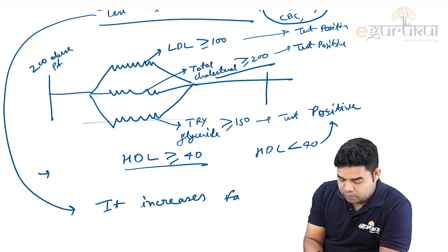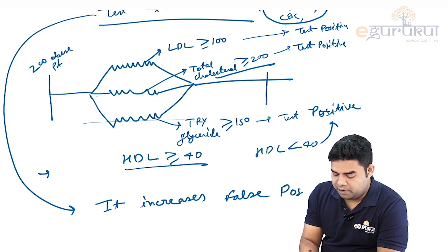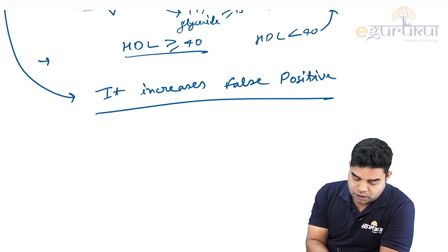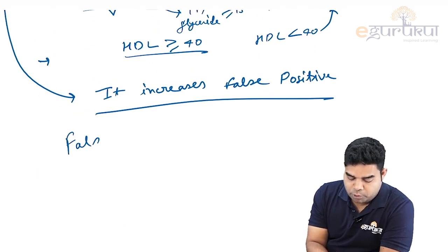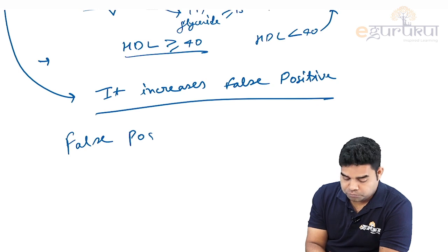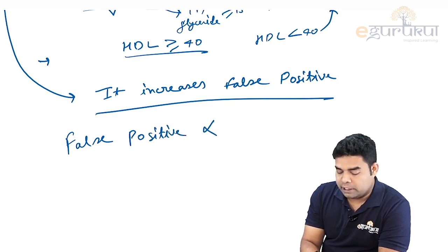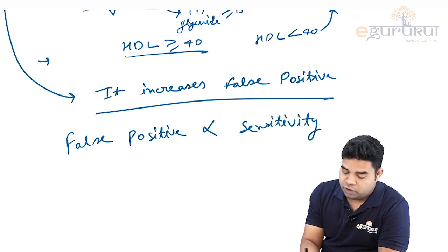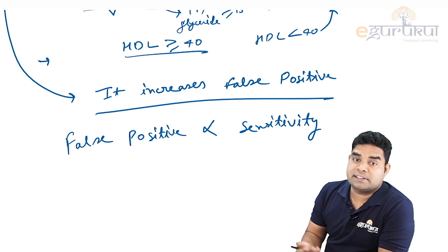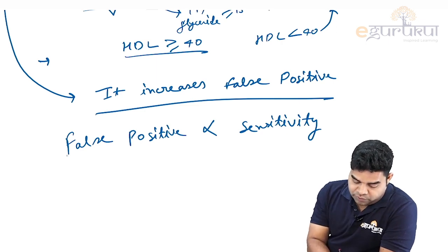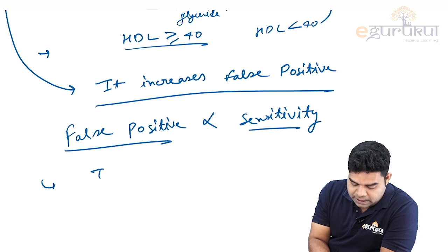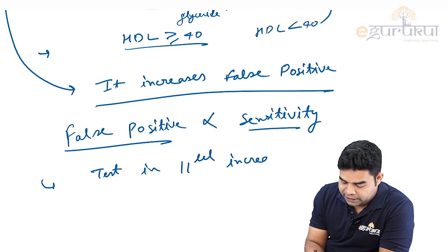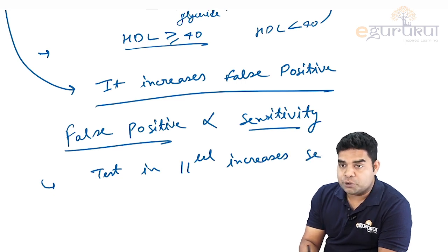Test in parallel increases false positive. False positive is directly proportional to sensitivity. The more positives you will include, either true or false, that will always going to increase the sensitivity. So it means when false positive is increasing, sensitivity is increasing. Test in parallel increases sensitivity.